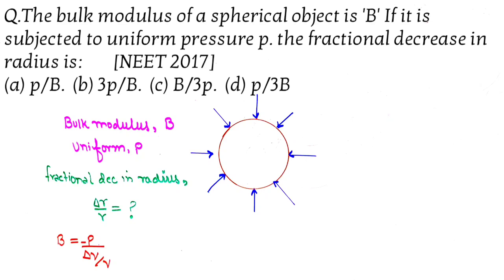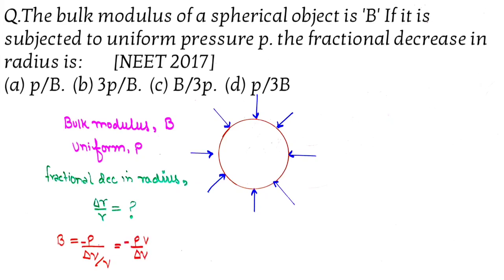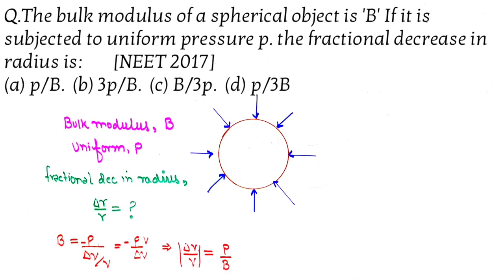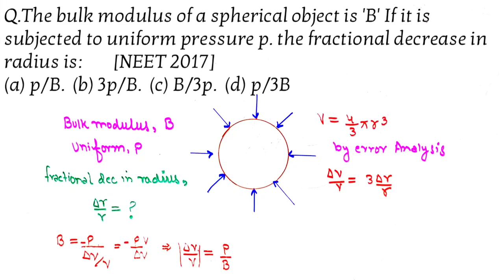So delta V by V is equal to P by B. Now the volume of a sphere is 4 by 3 pi r cube. Using the error analysis concept, you can write delta V by V is equal to 3 times delta r by r.